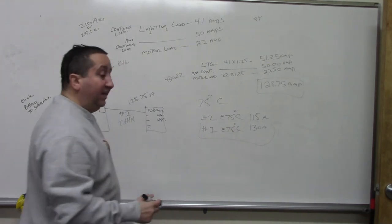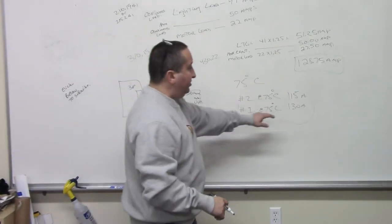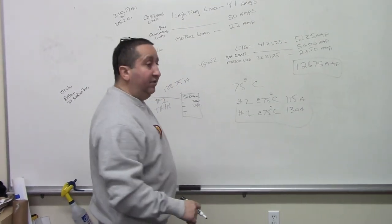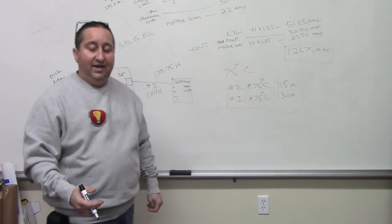Okay? That's how you do it. Just a basic calculation. You go to the 75-degree column and it's 130 amps. Thank you and have a great day. And if you want, you can click below to subscribe. Take care. Bye.